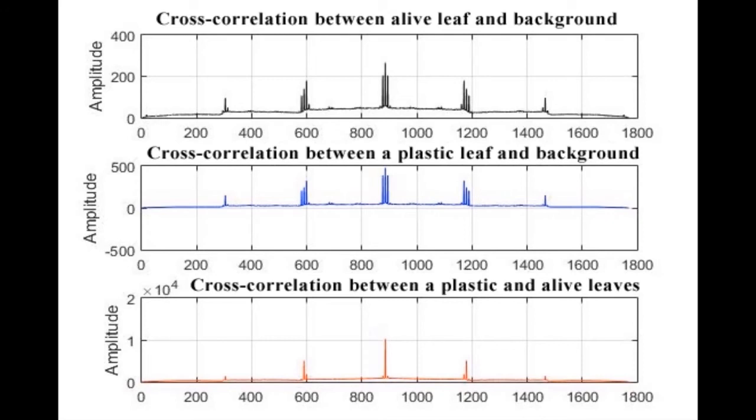To measure the similarity in color changes between the live leaf and the plastic leaf, we can see that the color changes of the plastic leaf are more similar to the background than the live leaf. There is a slight correlation between the color changes of both leaves.